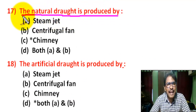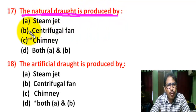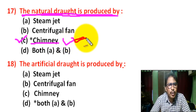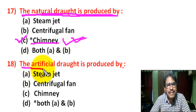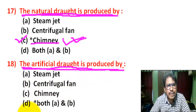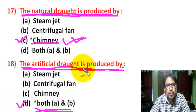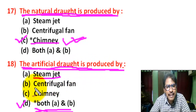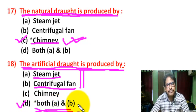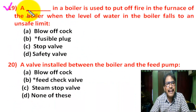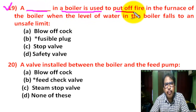Question number 16: Draft may be produced by — there are four options. Correct answer is D: all of the above. Draft may be produced by a mechanical fan, by a chimney, or by a steam jet. Question number 17: Natural draft is produced by — correct answer is C: chimney. Question number 18: Artificial draft is produced by — correct answer is B: both A and B — steam jet and centrifugal fan.